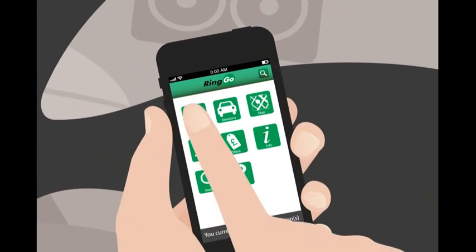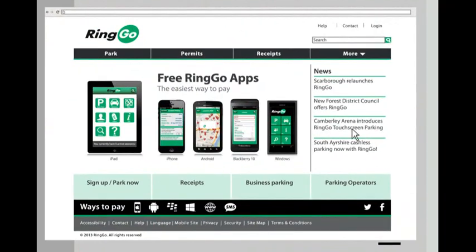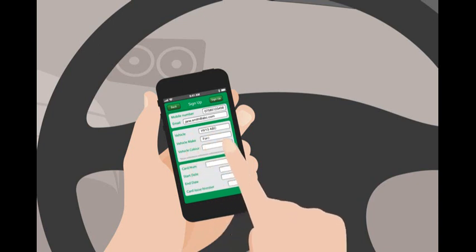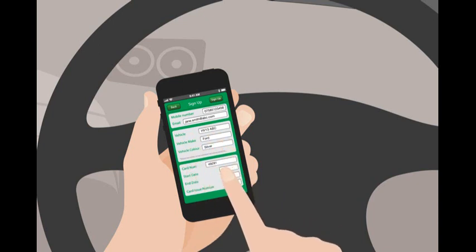You can register in advance by app or online. Whichever way you register, you just need your vehicle registration, make and color, and your credit card details.